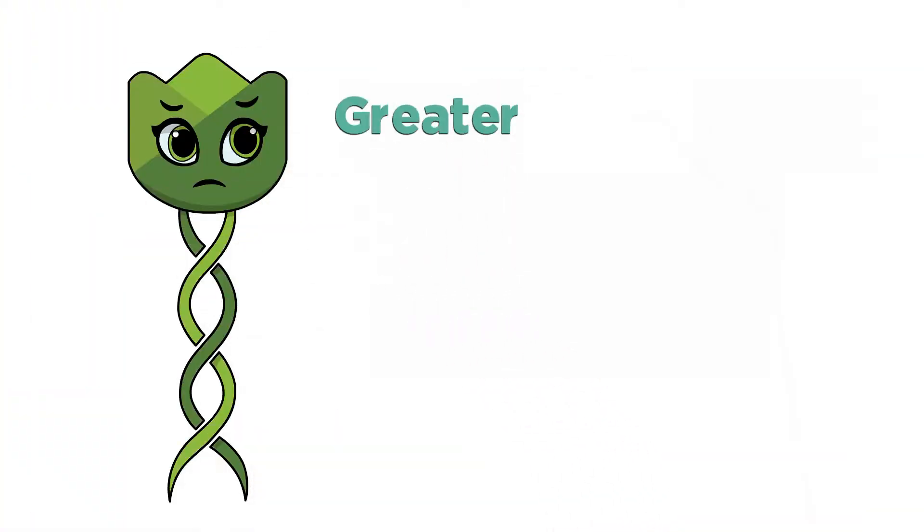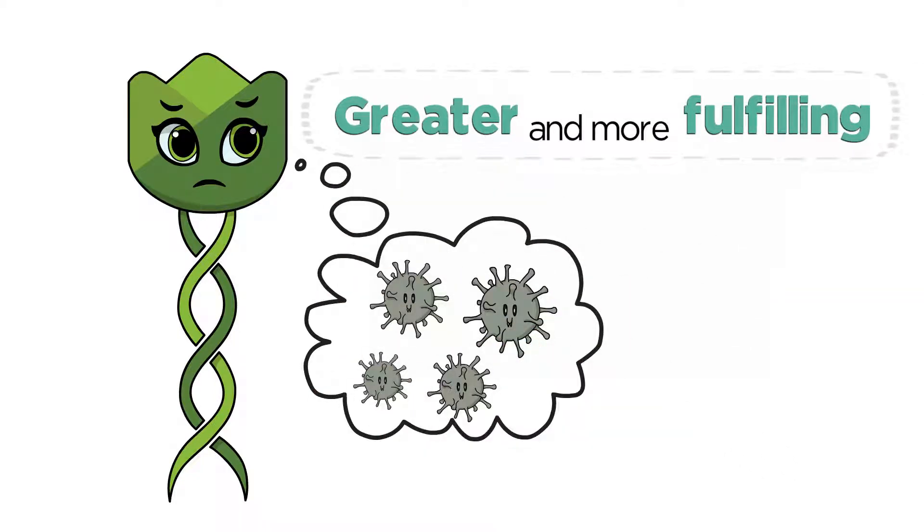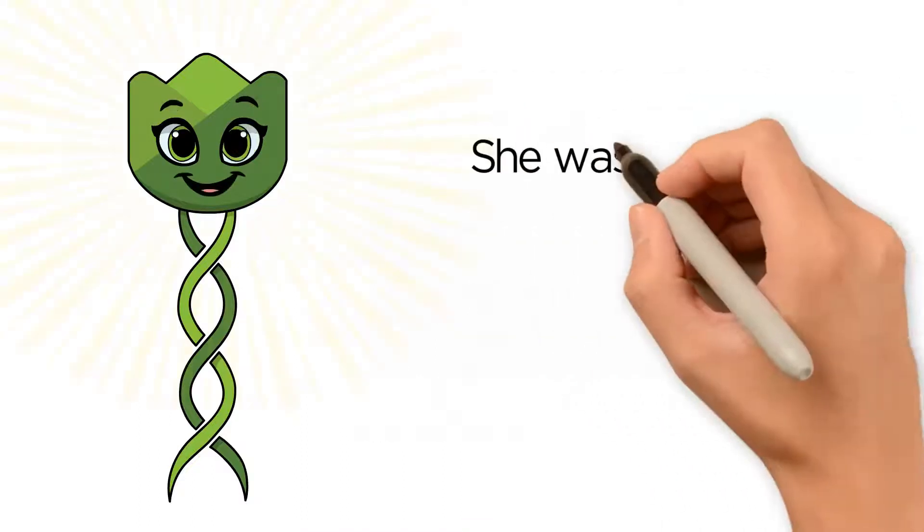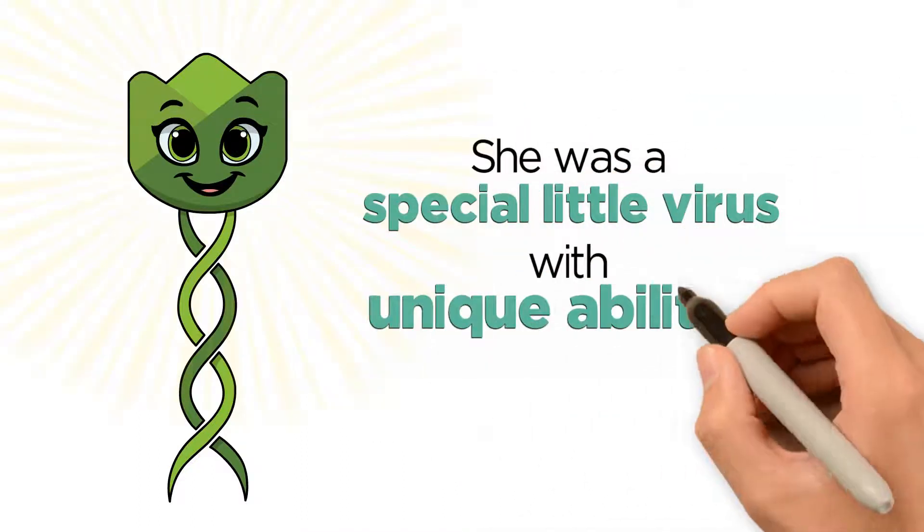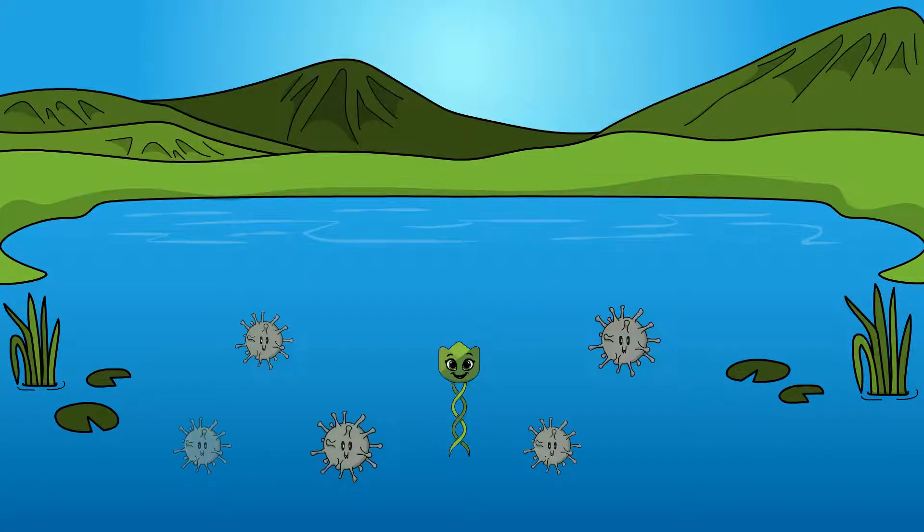Taylor yearned to be a part of something greater and more fulfilling. She yearned to be more than just another of the billion microbes that inhabit the same pond. But what Taylor did not know was that she was a special little virus with unique abilities. She was very different from all the other microbes in the pond.